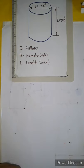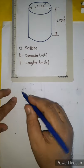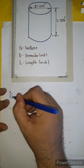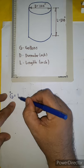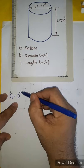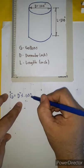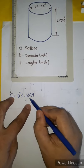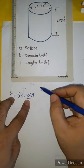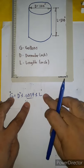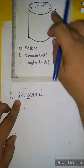Using this example, we will try to calculate. The formula is: diameter squared times 0.0034. This 0.0034 is the constant in inches, times the length. The length is 300 inches, and our diameter is 100 inches.